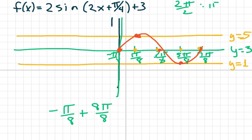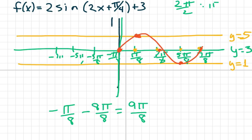Now we're going to subtract from negative pi over 8. We're going to end at negative 9 pi over 8. So that's going to be negative 3 pi over 8, negative 5 pi over 8, negative 7 pi over 8, and then negative 9 pi over 8. And then you just go down and proceed. So you go down, back up, up here, and down. The whole sine wave was shifted to the left by negative pi over 8.